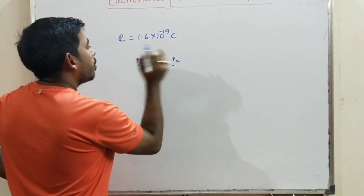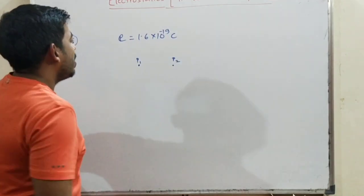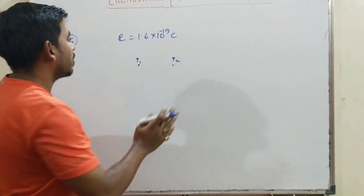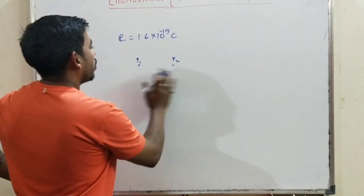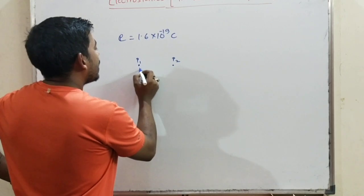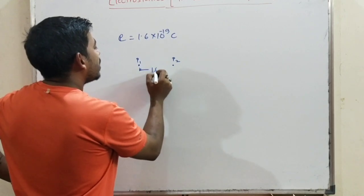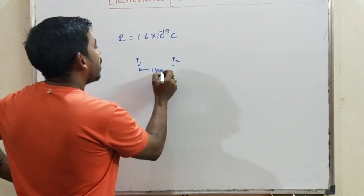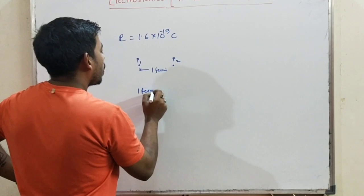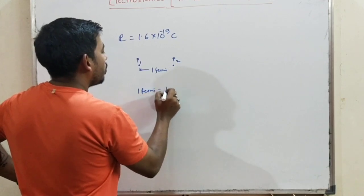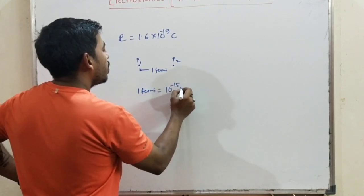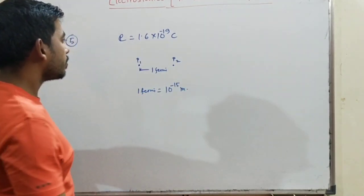Two protons, P1 and P2, each with equal charge. Distance between them = 1 fermi = 10⁻¹⁵ meter.